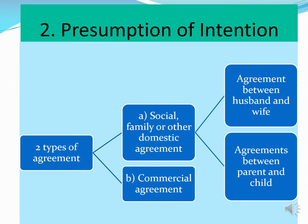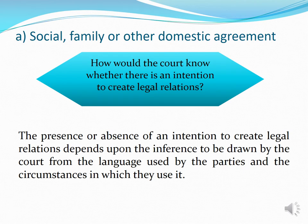On presumption of intention, there are two types of agreement to look into: first, social, family, or other domestic agreements; and second, commercial agreements. For social, family, or domestic agreements, I will discuss agreements between husband and wife, and between parent and child. This is the second of our two ways to determine intention — presumption of intention based on type of agreement.